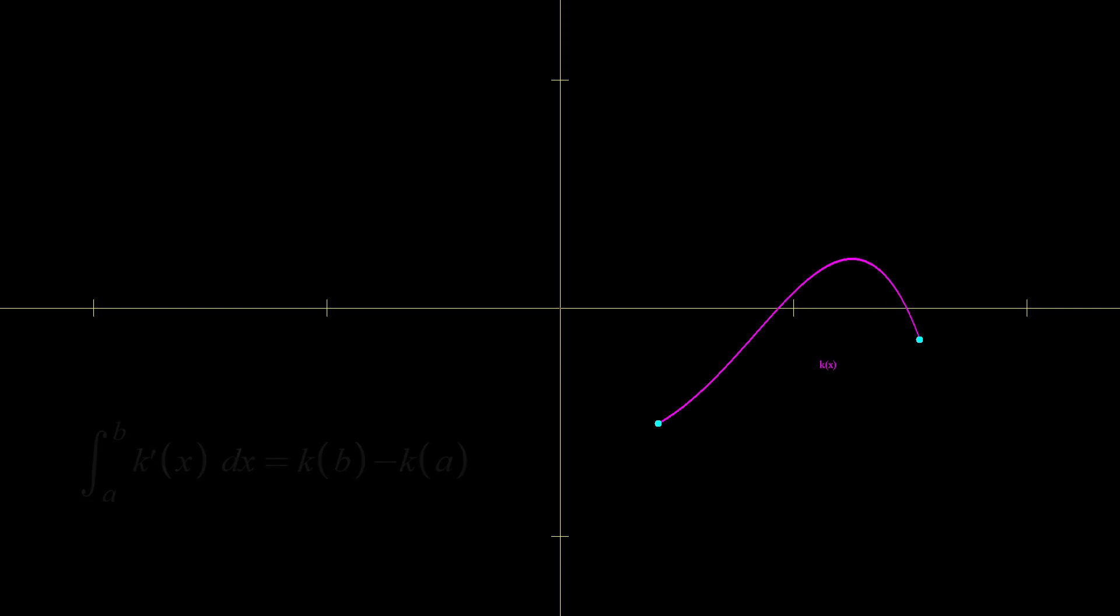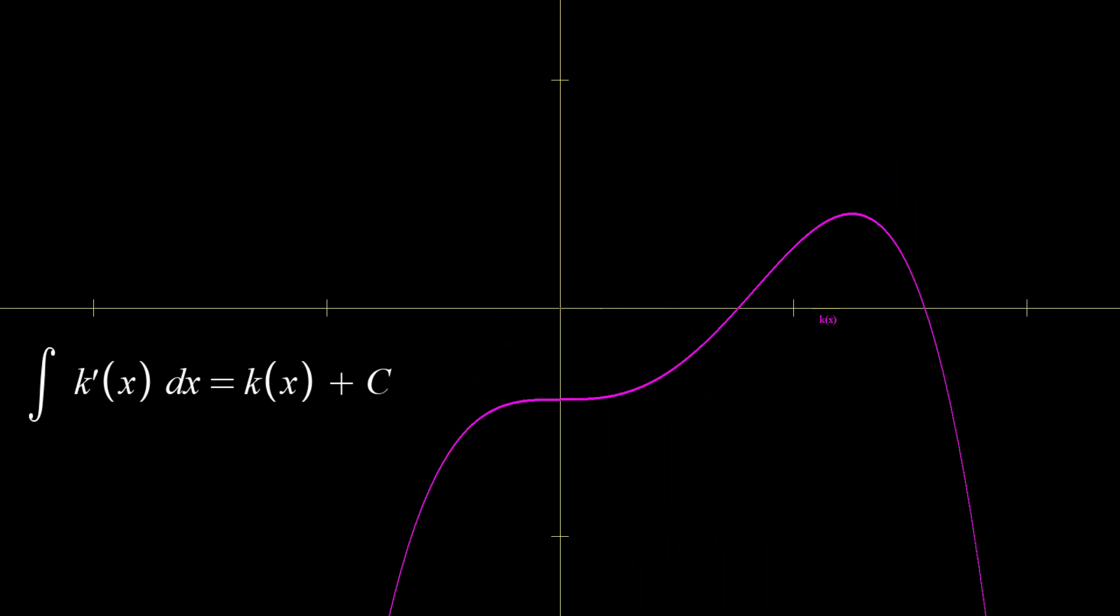However, if this was an indefinite integral, the starting point, that is the vertical shift, would matter as we are not necessarily looking only for change. Therefore, after calculating an indefinite integral, we always add a plus c to tell the fact that its vertical shift can be any constant.